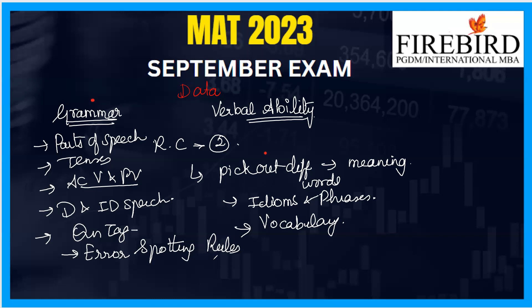After covering the basic grammar, try to practice two to three reading comprehensions minimum in a day. Also, find out the odd words you come across and their usage. For the verbal ability part, it is enough if you spend 20 minutes — not more than 20 minutes — on verbal ability per day. I hope you got some idea on how to crack the verbal ability part.